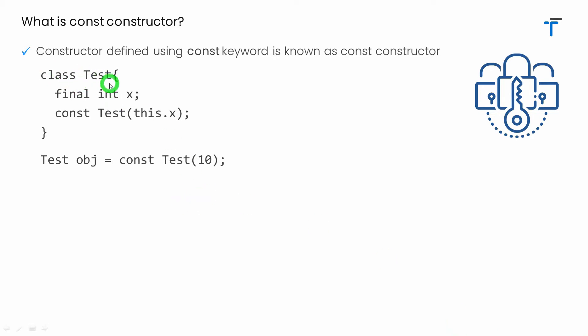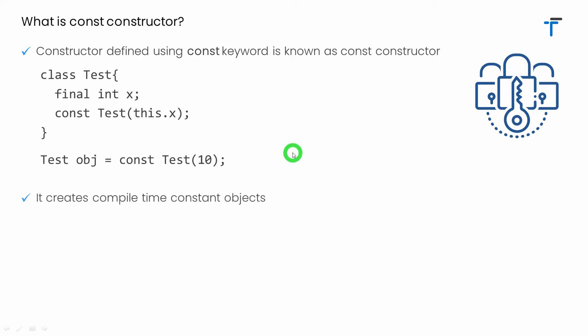Look at this example — we have a class called Test, and inside this class we have a default constructor. Before defining that constructor, I use the keyword const. Now whenever we have the const constructor, while creating an object we can also write const here. All objects created using the const constructor are immutable objects, whether you use the const keyword or not while creating the object.